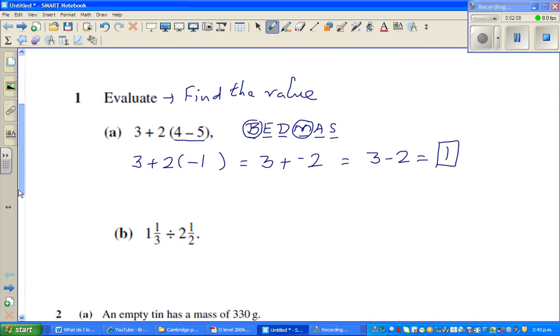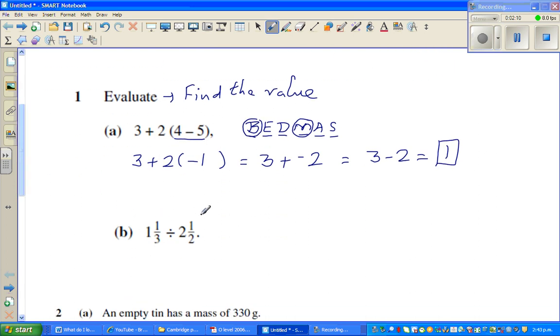Question number 1b. This is 1 and 1 third. So that is, 1 whole is 3 thirds. So this is 3 thirds and 1 third, which is 4 thirds. Divided by 2 and 1 half. 2 is 4 halves, so this is 4 halves and 1 half, which is 5 halves.